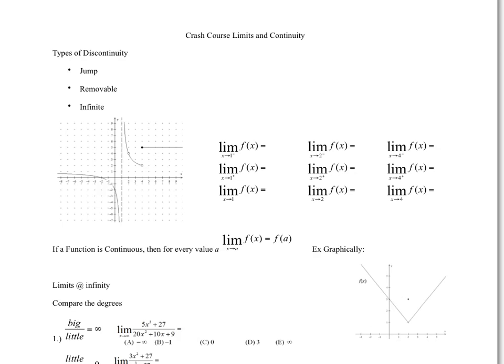Hey guys, let's get a little refresher crash course of limits and continuity. We're all set on the word continuous — continuous meaning that we can draw the function without lifting our pen off the paper. An example of something that's continuous is anything we can draw without having to lift our pen up off the paper.